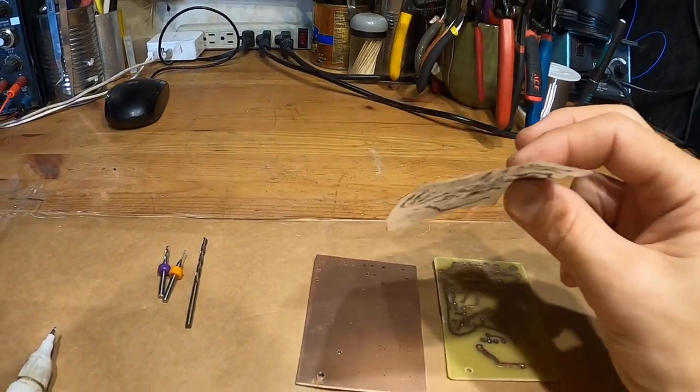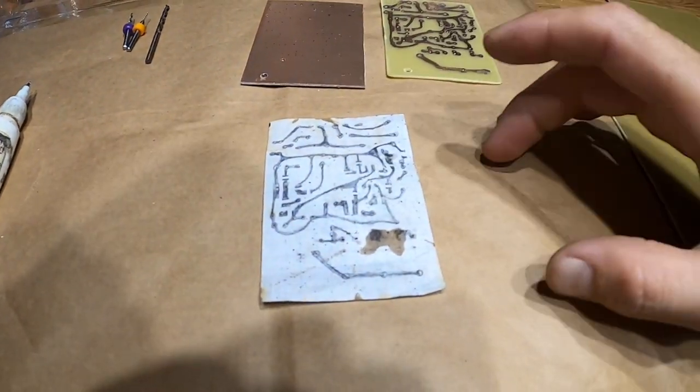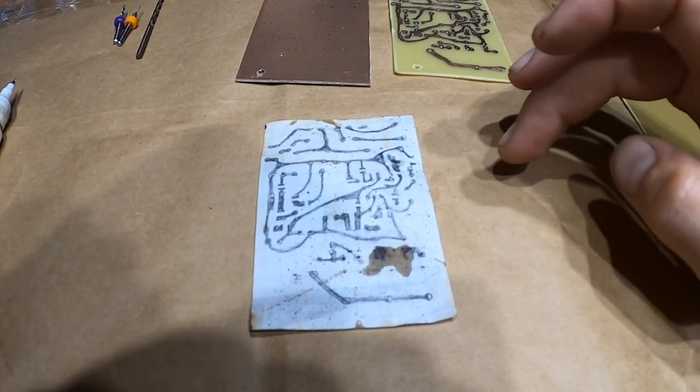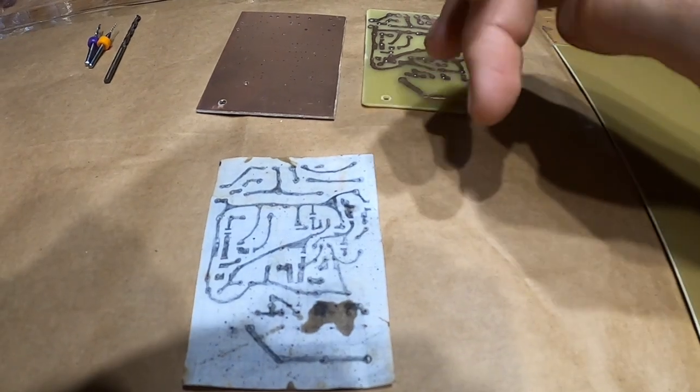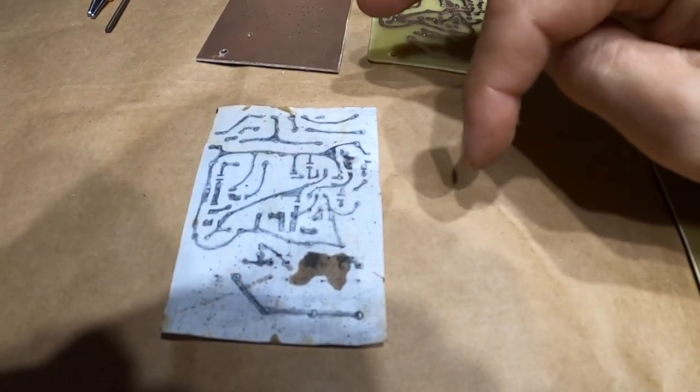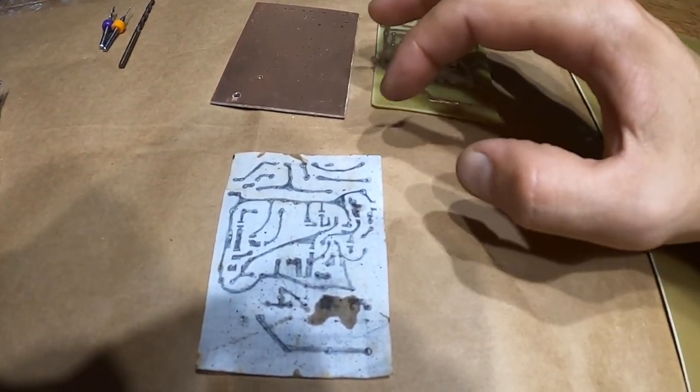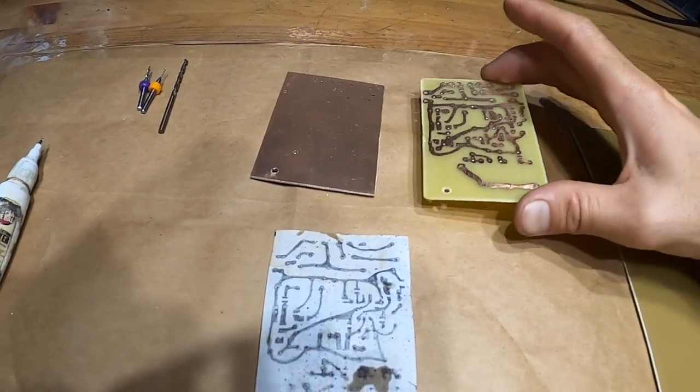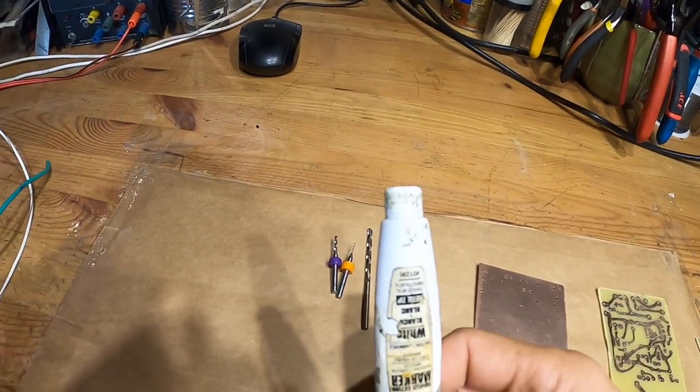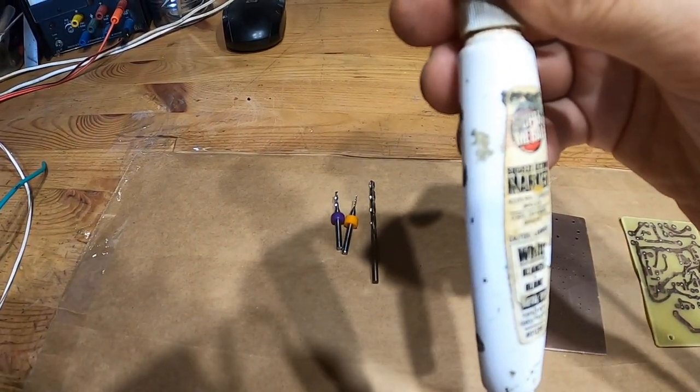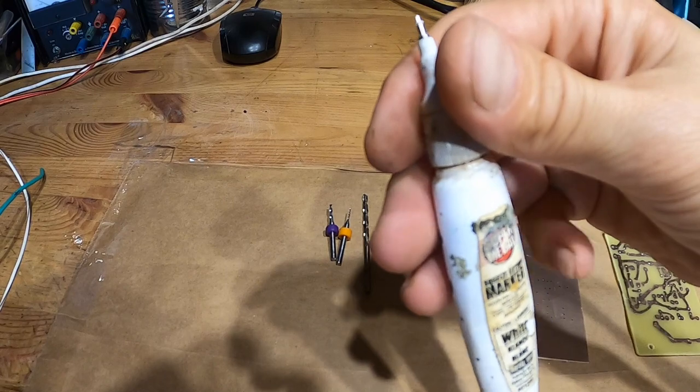You need one of these layouts, or you can place the components by looking at the circuit. You place the components roughly where you want them, and then you draw the lines connecting them. Then you transfer those lines onto the copper board.